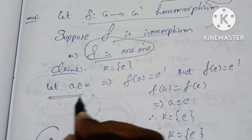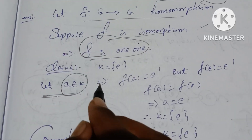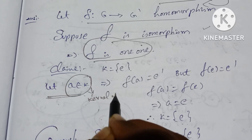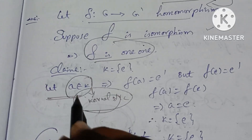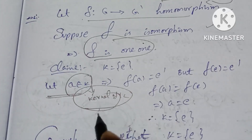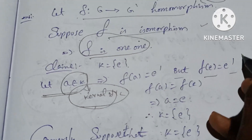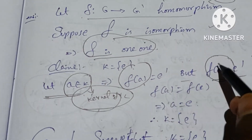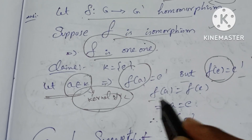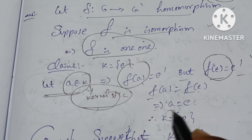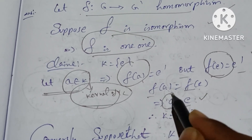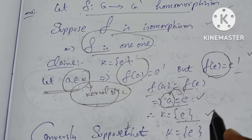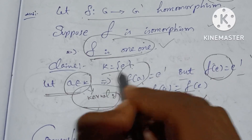Let A belong to K — A is an element of K. Therefore F(A) equals E', since K is the kernel. So if A belongs to K, automatically F(A) equals E'. But we also have F(E) equals E'. So we have two conditions: F(A) equals F(E). Since both sides equal E', and F is one-to-one, A must equal E. Therefore K equals {E}. So if F is one-to-one, then K equals E — proved.